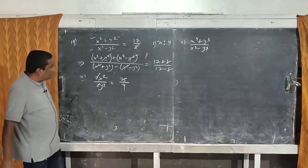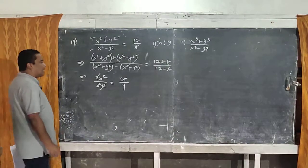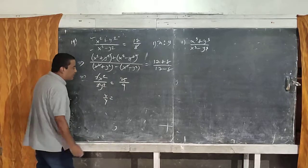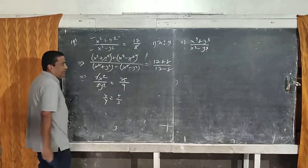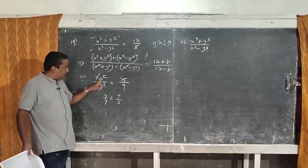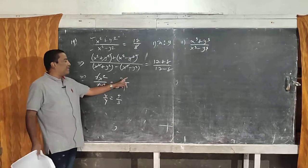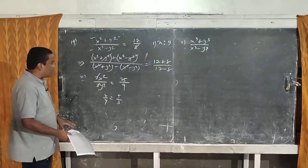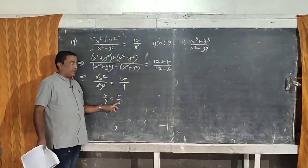This simplifies to 2x²/2y² = 25/9, so x²/y² = 25/9. Taking the square root: x/y = √25/√9 = 5/3. So x:y = 5:3.